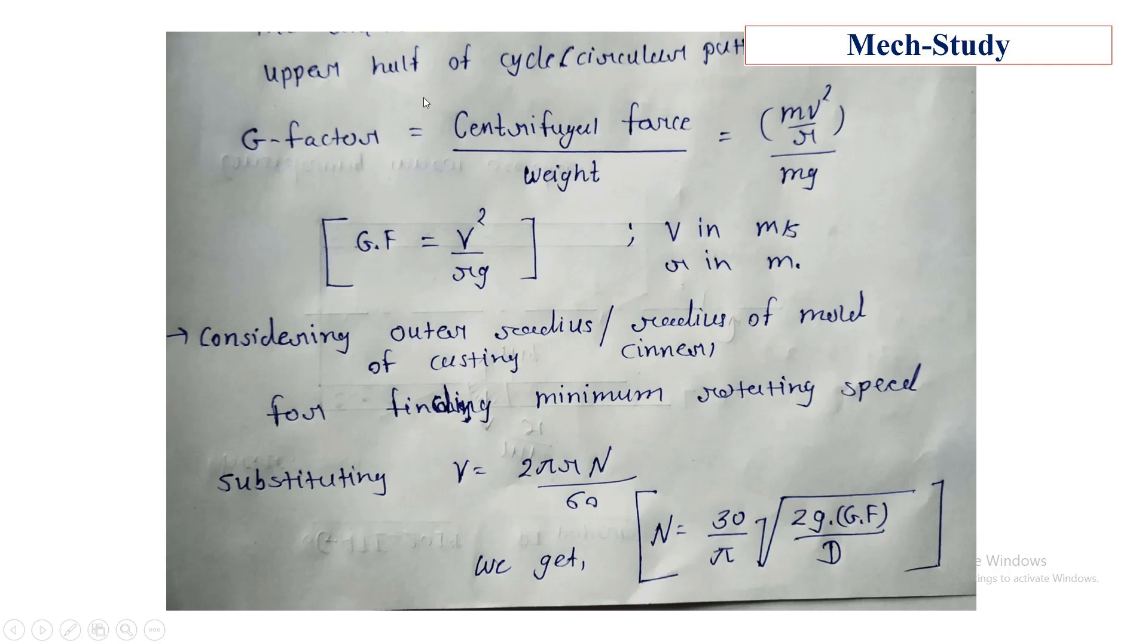Here the G-factor is equal to centrifugal force upon weight. By substituting this value we got an expression of G-factor in terms of velocity and radius, where v is tangential velocity in meter per second and r in meters. Now consider outer radius of casting, or we can say inner radius of mold, for finding minimum rotating speed.